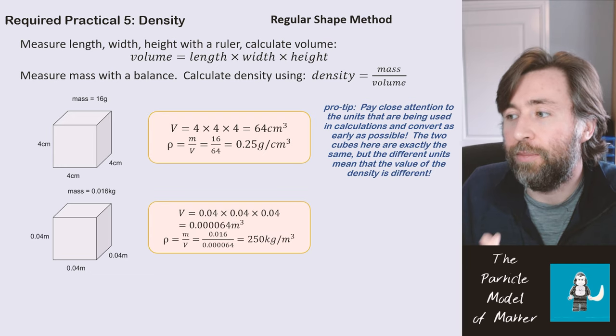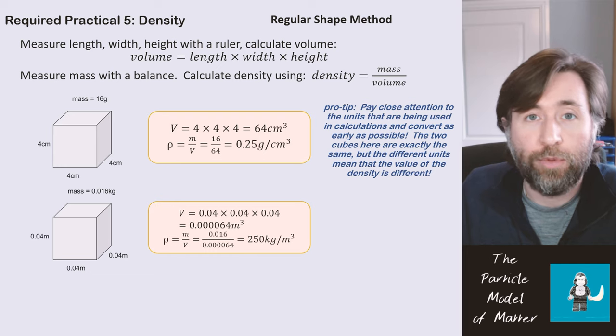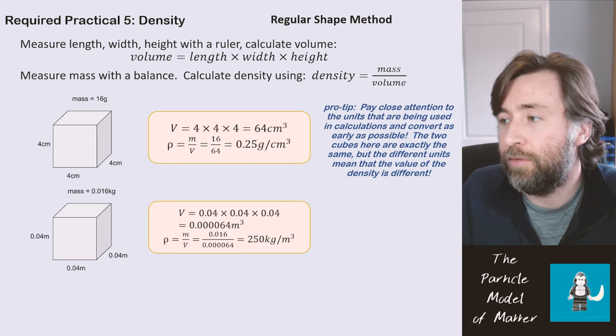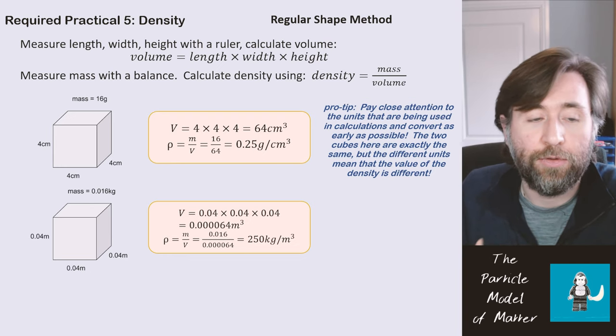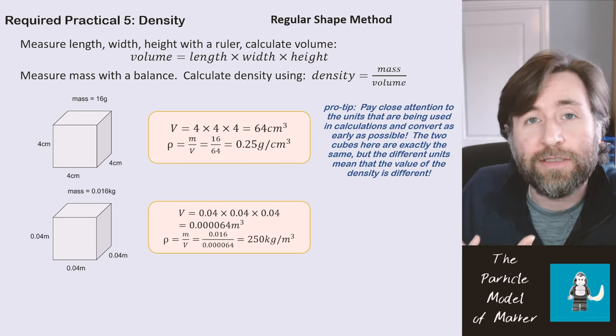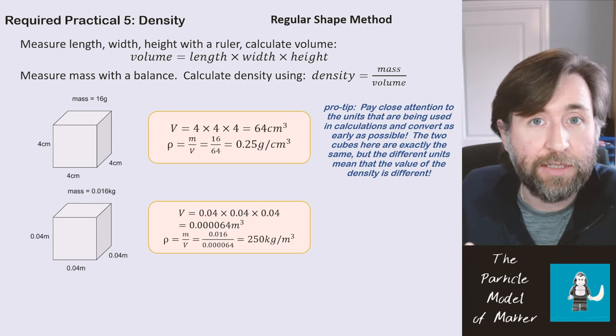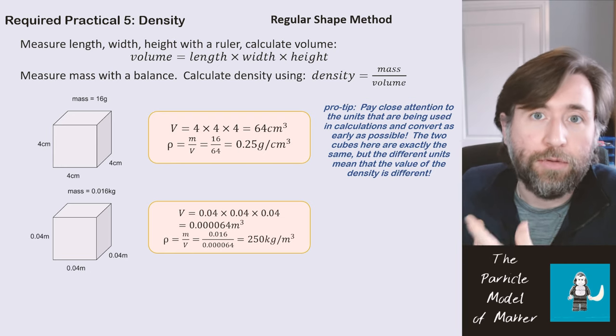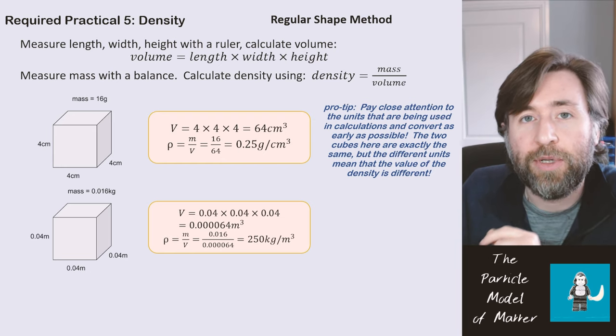Same cube though, but with units in meters and kilograms. 0.04 times 0.04 times 0.04, that's the same volume, but you end up with 0.000064m cubed. And then density is mass over volume gives you that 0.016kg, that's the same 16g but in a different unit, over 0.000064 gives you 250kg per meter cubed.